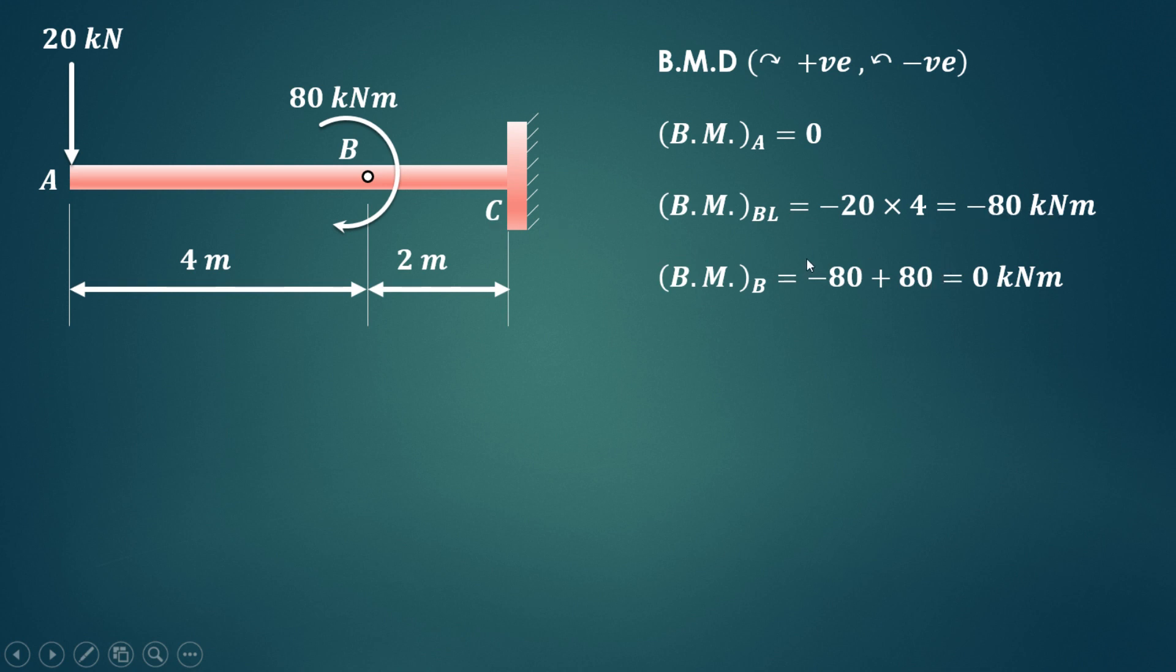So that will get added to this particular minus 80 kNm. So minus 80, that is the bending moment just at the left of B, and this clockwise moment which is the external clockwise moment, as it is clockwise it is positive. So minus 80 plus 80, that is zero. So bending moment exactly at point B will be zero.